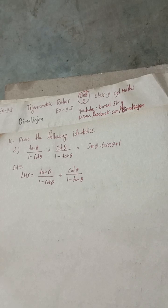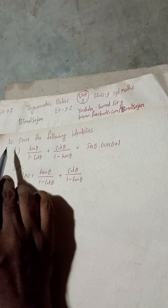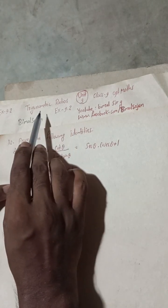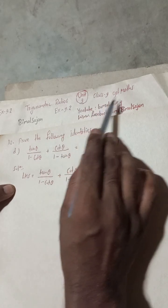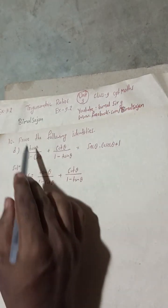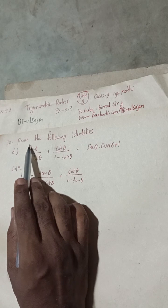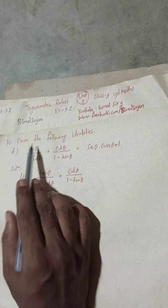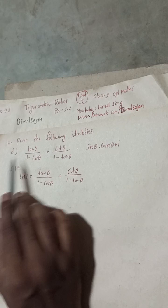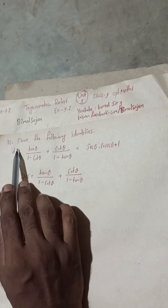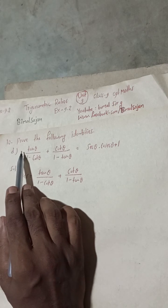Hi everybody, welcome back to Bimal Sarji YouTube channel. This is question number 10d of Exercise 9.2, trigonometric ratios — Plus 9 Optional Mathematics solutions. Numbers 11, 12, and 13 have already been uploaded, and this is the last number of 10d.